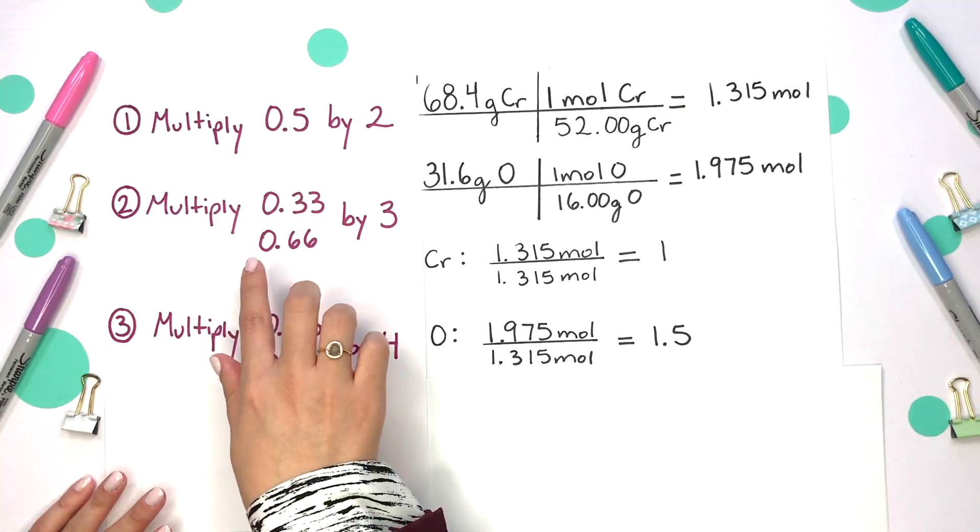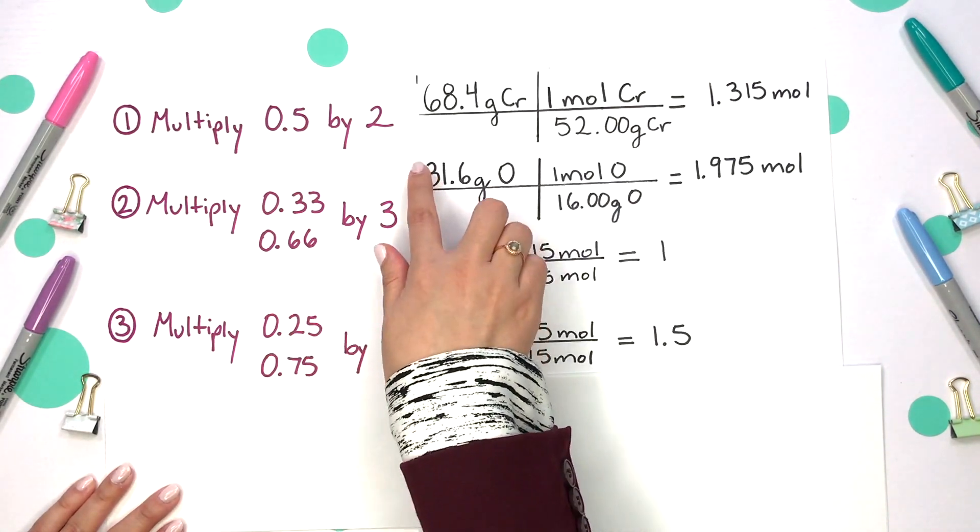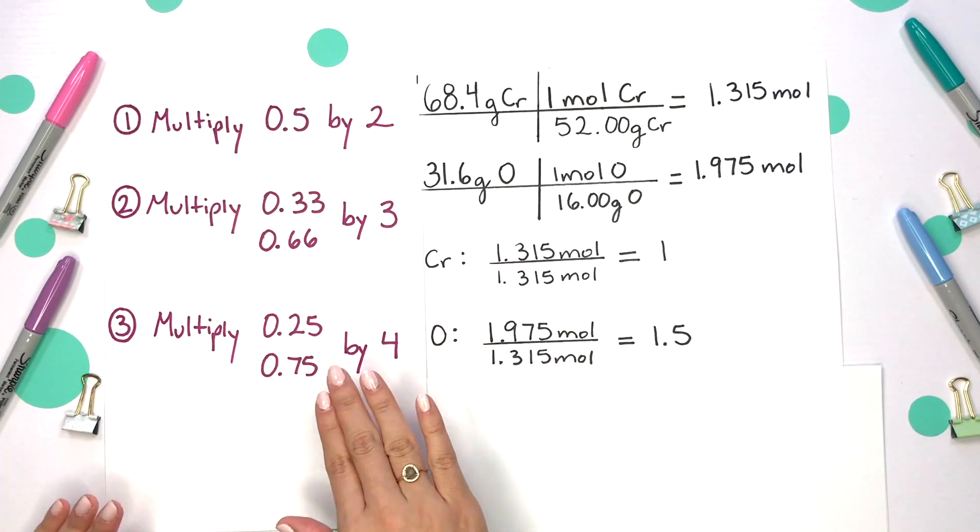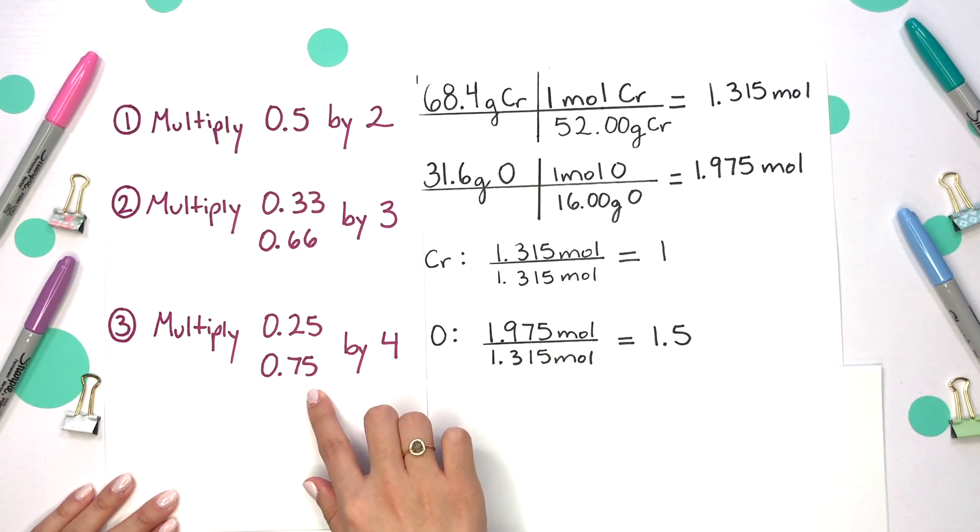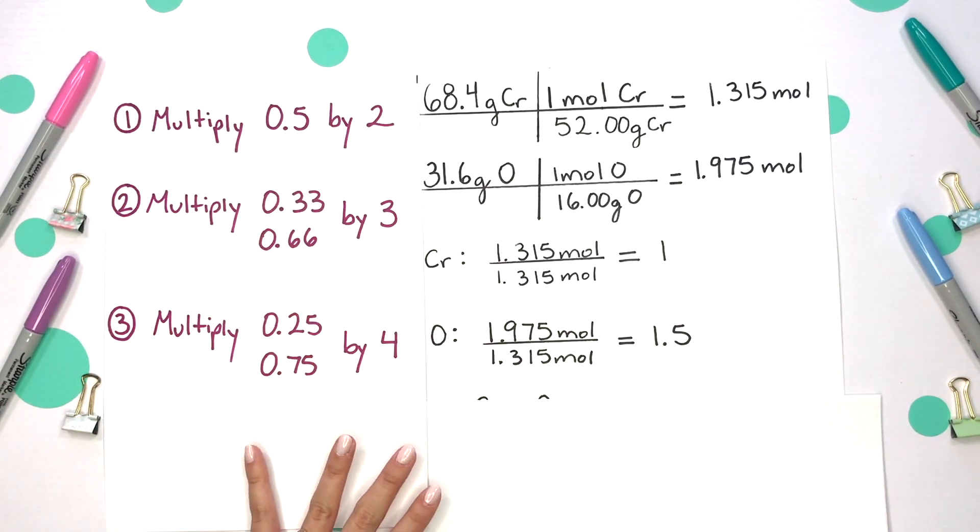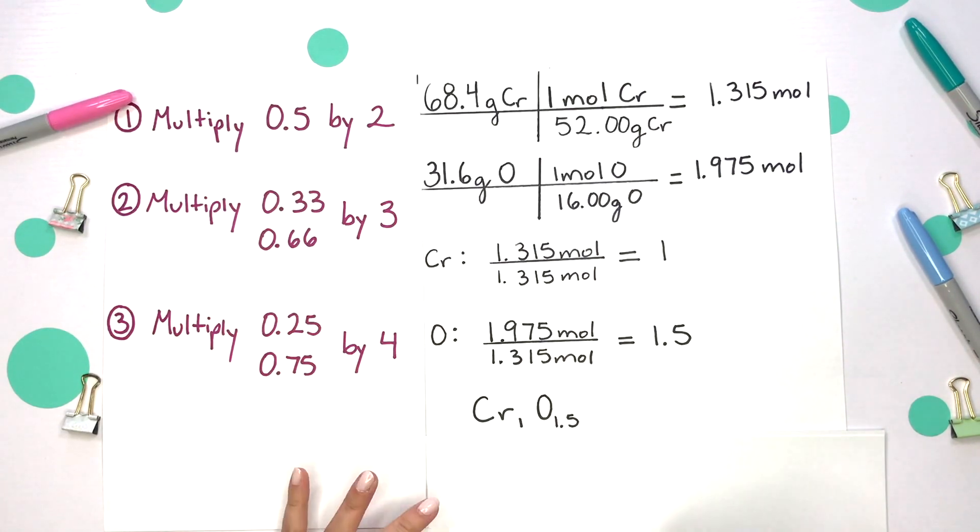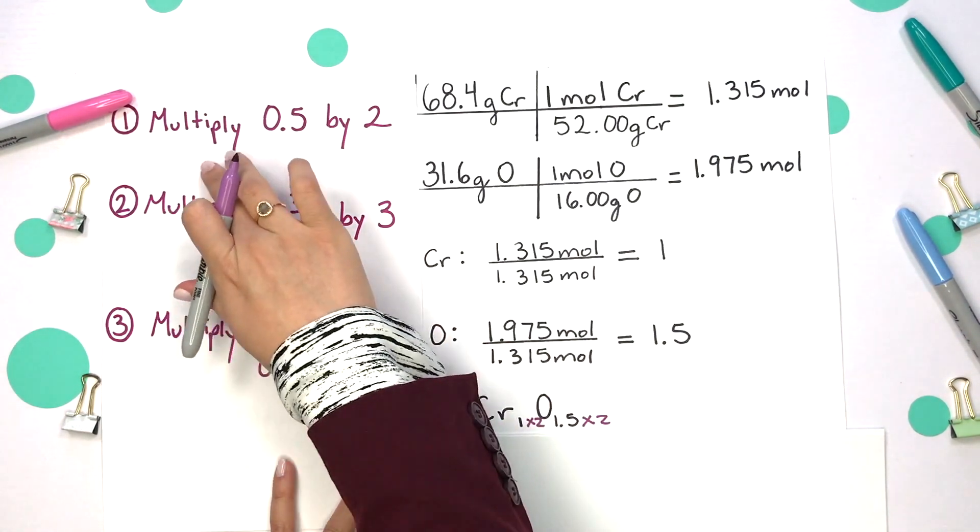There's another rule where if our decimal ends with 0.33 or 0.66, multiply each subscript by 3. If we have decimals that end in 0.25 or 0.75, multiply every single subscript by 4. So in this case we're going to multiply both of these subscripts by 2 just because of this 0.5 value and that was the rule.